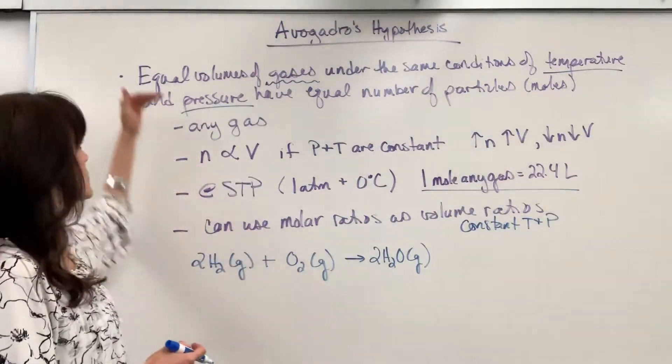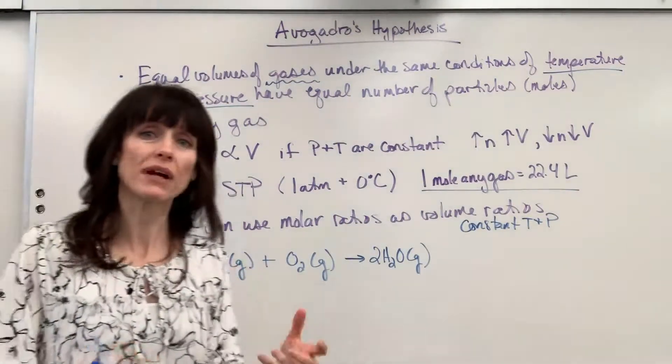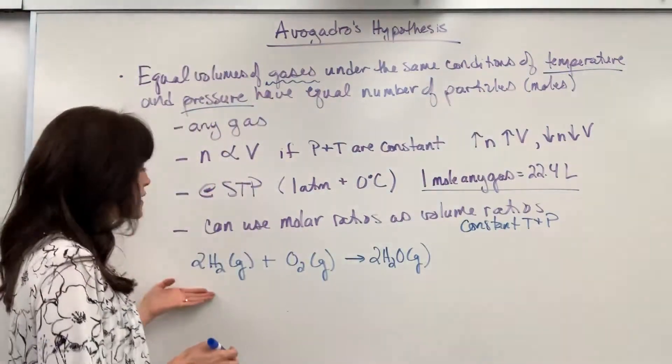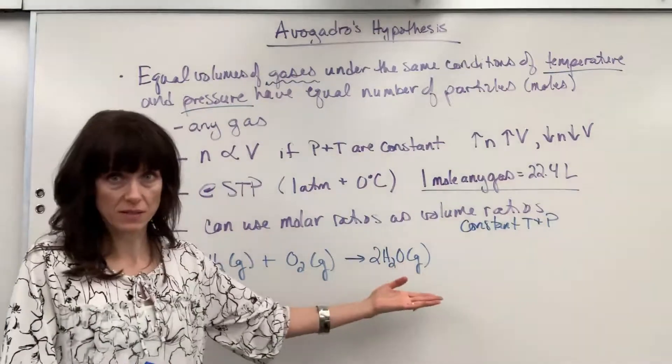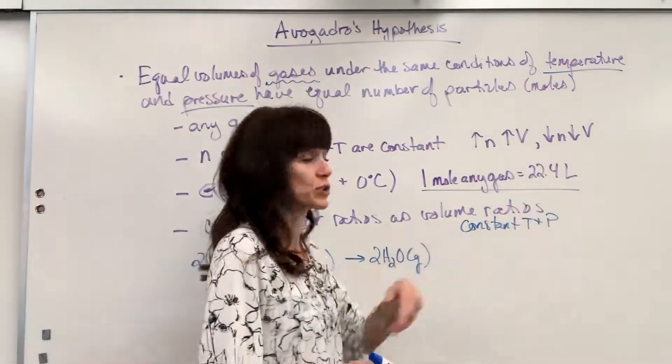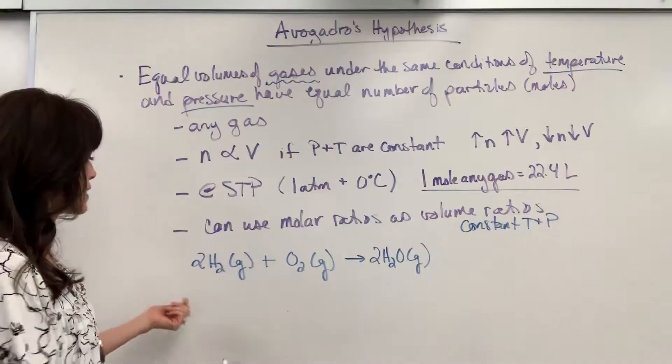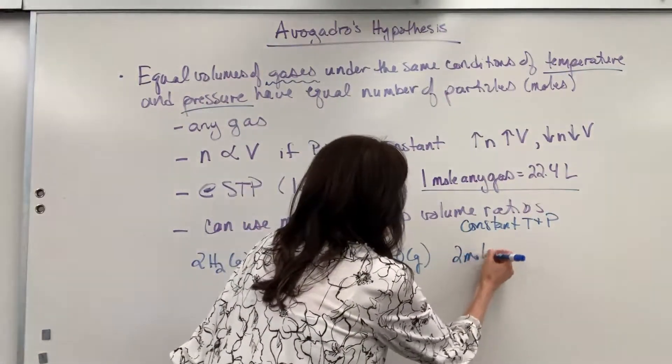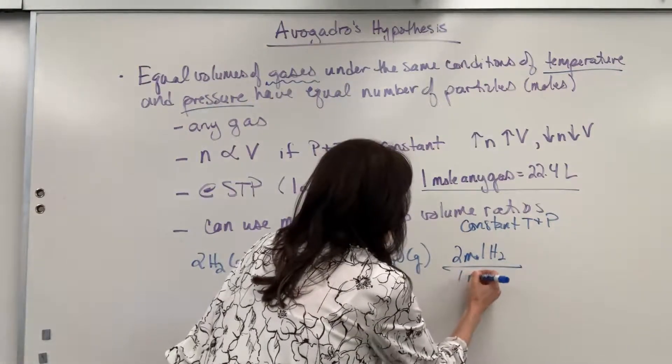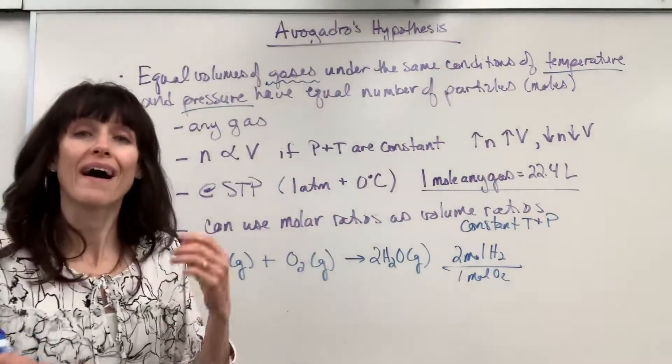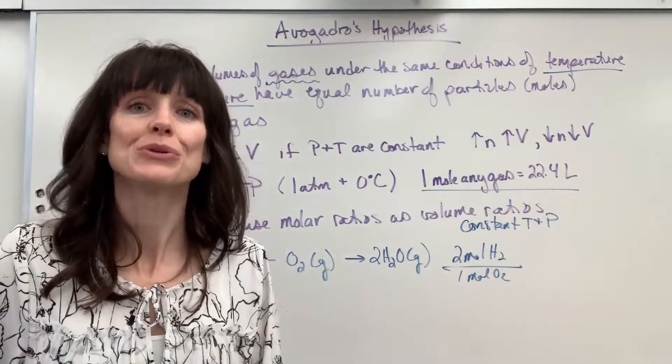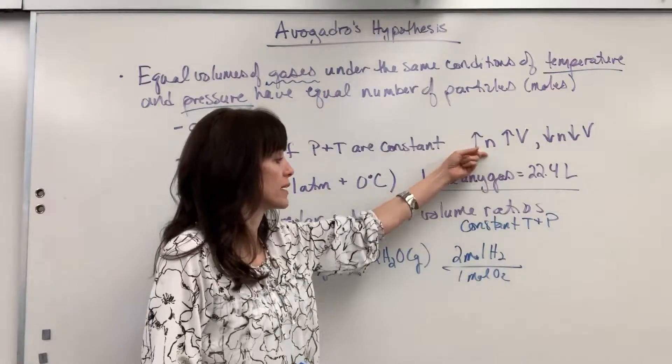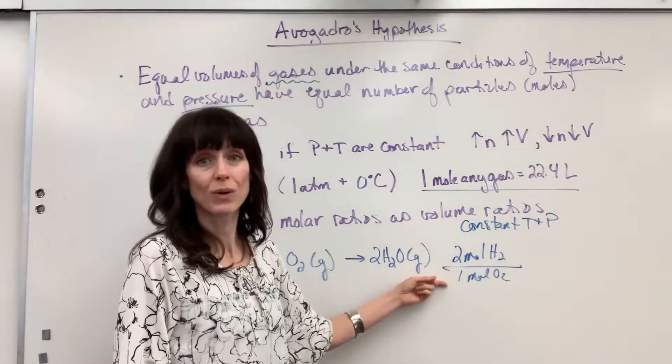You only have to have STP when we're attaching this very specific number of the 22.4. Here, however, remember, it goes back to Avogadro's hypothesis. There's a direct relationship between moles and volume when you have constant temperature and pressure. So, as long as you have gas phases and constant temperature and pressure, let me show you. If I'm looking at this molar ratio, two moles of hydrogen react with one mole of oxygen. Well, I can change that word mole to liter because the same proportionality is going to apply for volume as it is for moles.